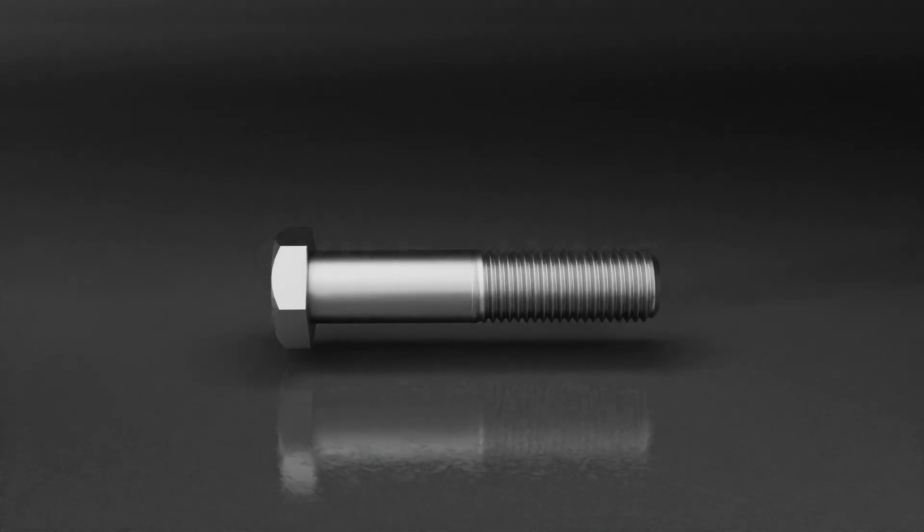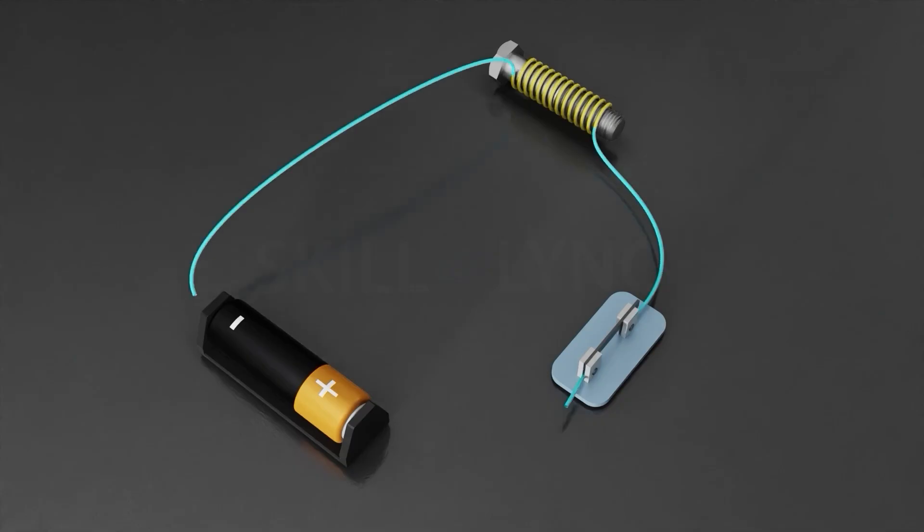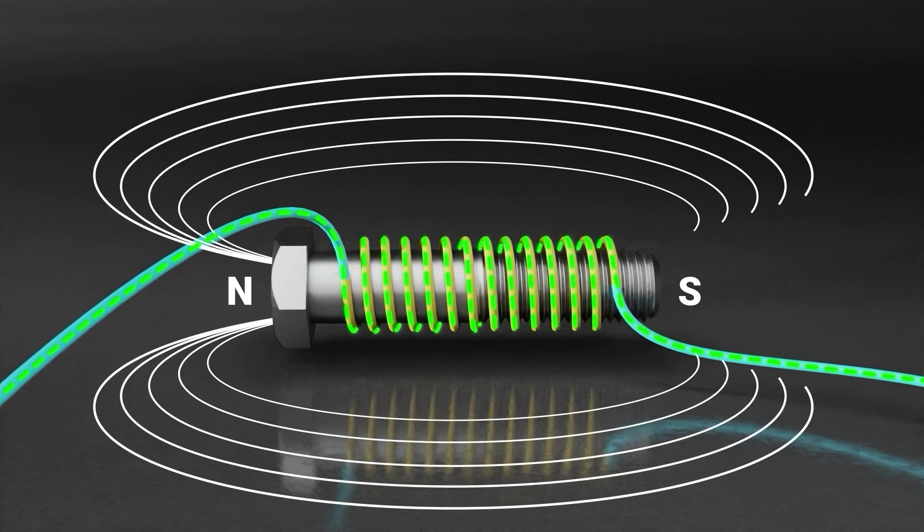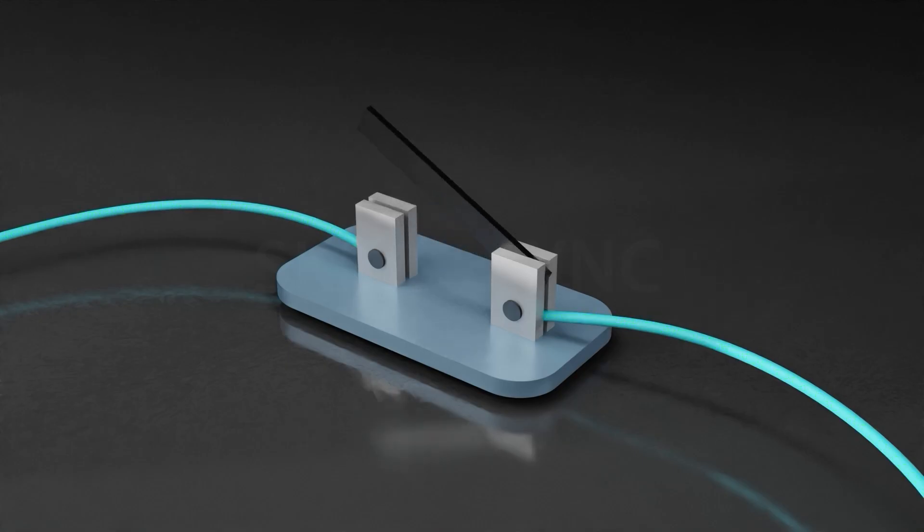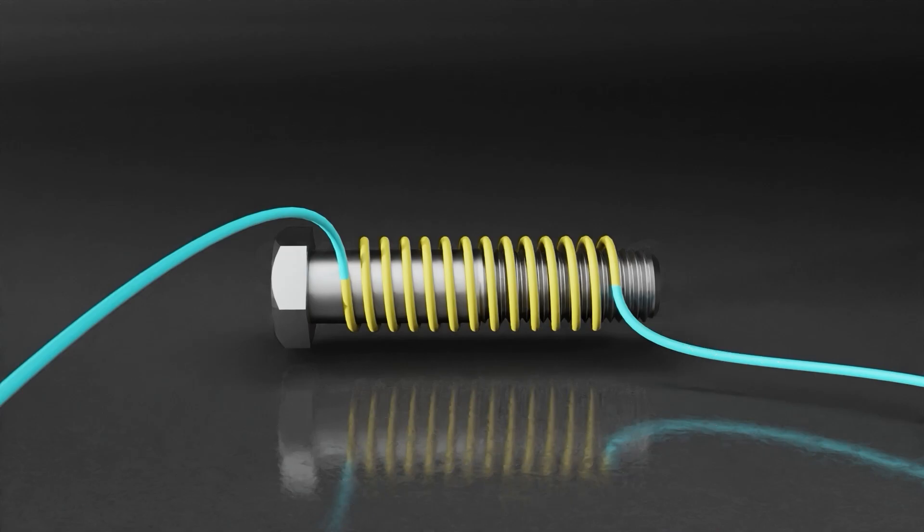But an average iron nail can also be made to display these properties if it is turned into an electromagnet. For instance, if we take an iron nail or rod, wrap a coil around it and pass electricity through it by connecting a battery to it, it will turn into an electromagnet and display magnetic properties. This means that it will have a north and south pole till it stays connected to a power source. When it disconnects from the power source, it loses the magnetic properties.